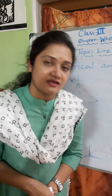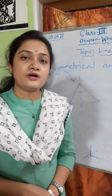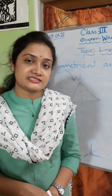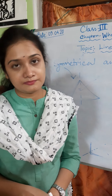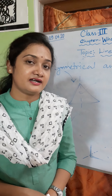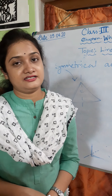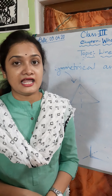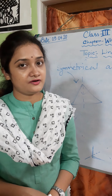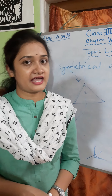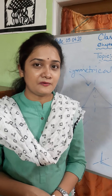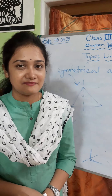Today I will give you one activity. You have to list out four objects from your home which are symmetrical, and four objects which are asymmetrical — find them from your home. This is your activity. So, today up to this. Stay home, stay safe. Bye bye.